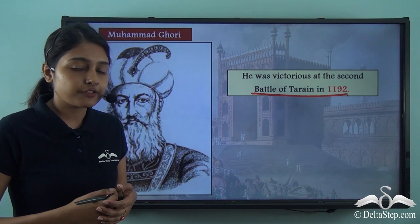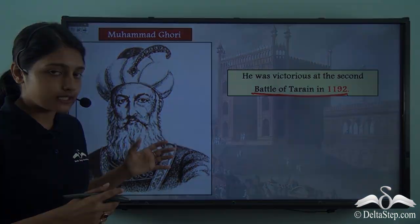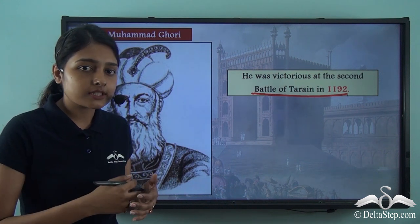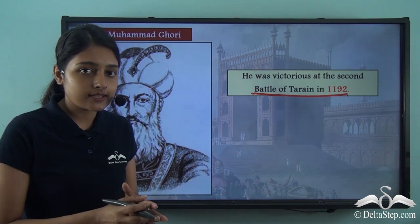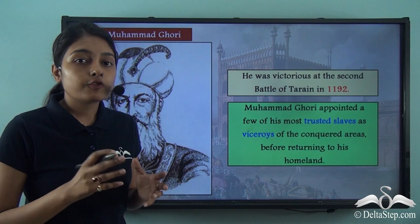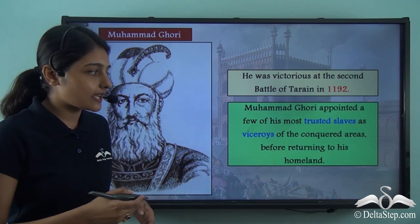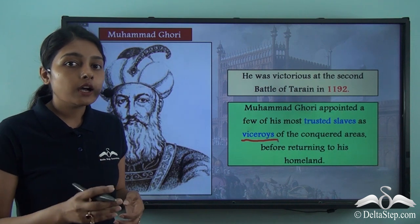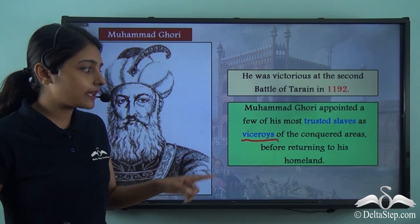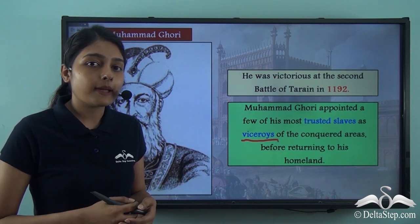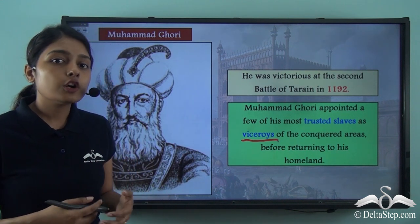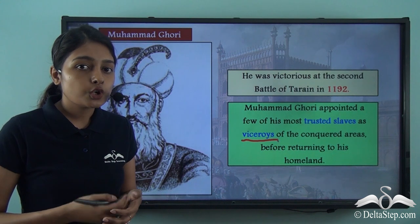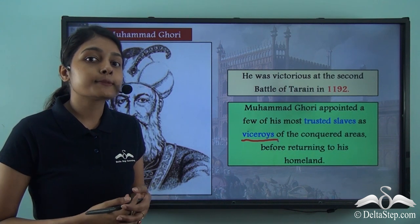The ruler Muhammad Ghuri defeated was Prithviraj Chauhan. After defeating Prithviraj Chauhan, Muhammad Ghuri took control of Delhi. After having his Ghurid dynasty spread out in India, Muhammad Ghuri was appointing a few of his most trusted slaves as his viceroys. The areas he had now conquered in India were under the control of his most trusted slaves, who became his viceroys, before he moved back to his homeland.